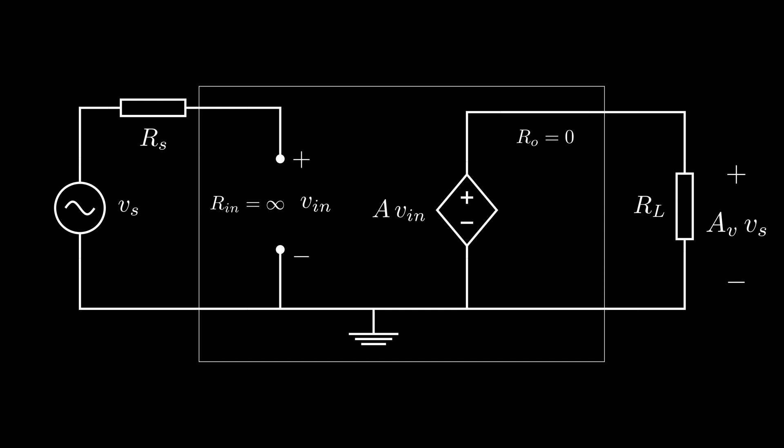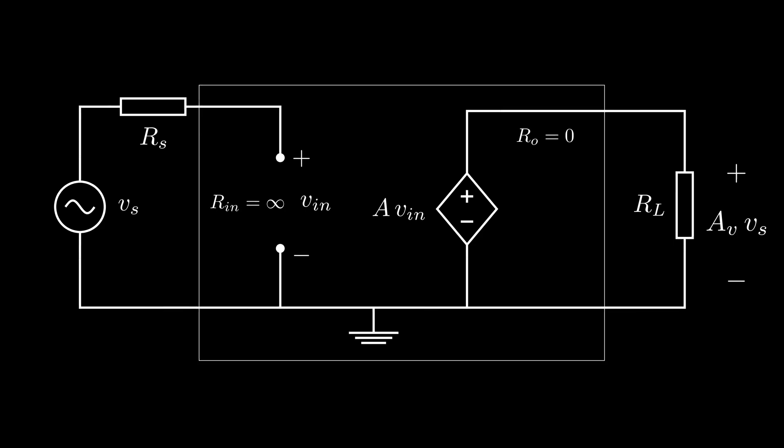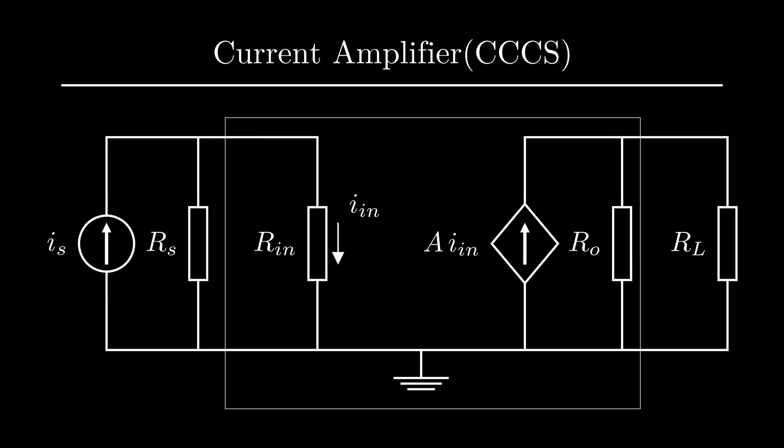Just like a voltage amplifier, we have three other kinds based on the type of input and the output it gives. A current amplifier senses an input current and gives us a scaled version of it at the output. It can be modeled with the current controlled current source.